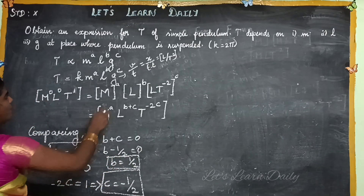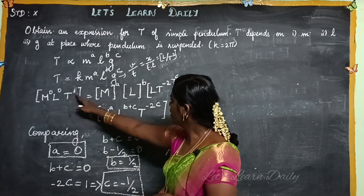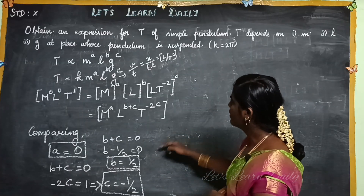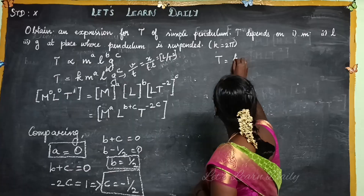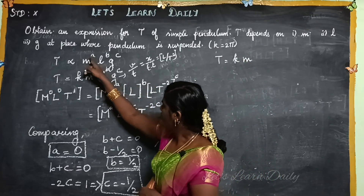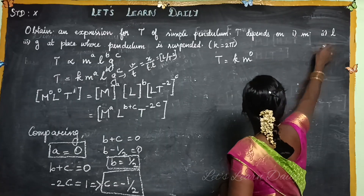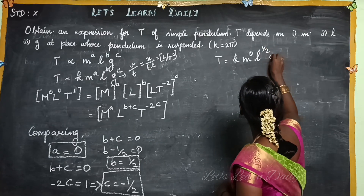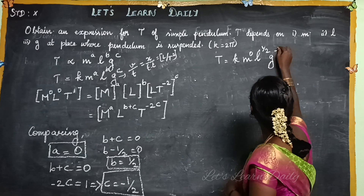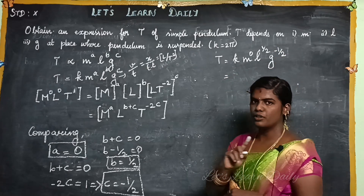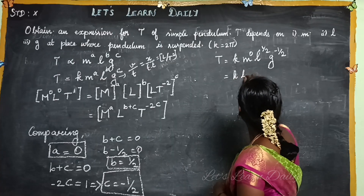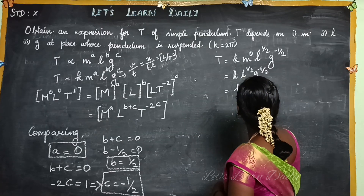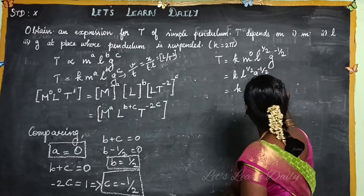Now we substitute the power values into the general formula T = k · M^a · L^b · G^c. Since A = 0, M^0 = 1 so mass disappears. B = 1/2 and C = −1/2, giving T = k · L^(1/2) · G^(−1/2). This simplifies to T = k · √(L/G).